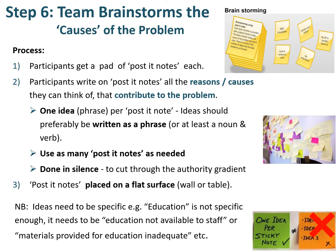Every participant gets a pad of post-it notes and writes on each one a reason or cause they can think of that contributes to the problem. Use one idea or phrase per post-it note, and write it as a phrase — for example, don't just write 'education', say what's wrong with education. Each participant uses as many post-it notes as they need, doing this in silence to cut through the authority gradient, so everyone has an equal voice. Place the post-it notes on a flat surface, usually the driver diagram you've started.